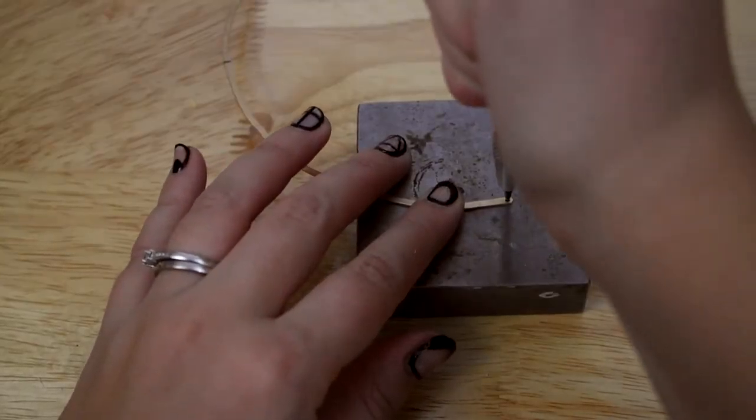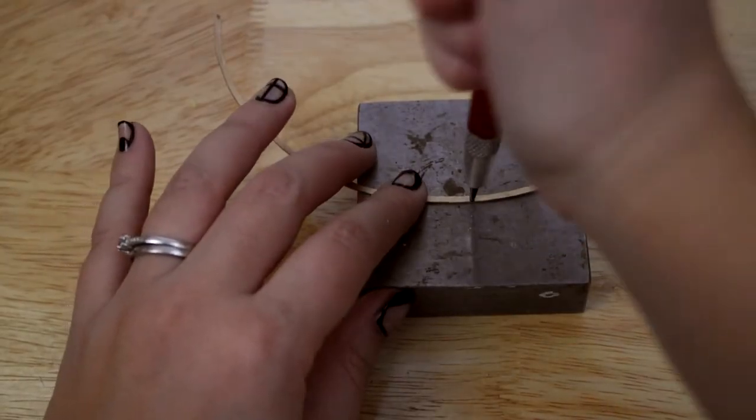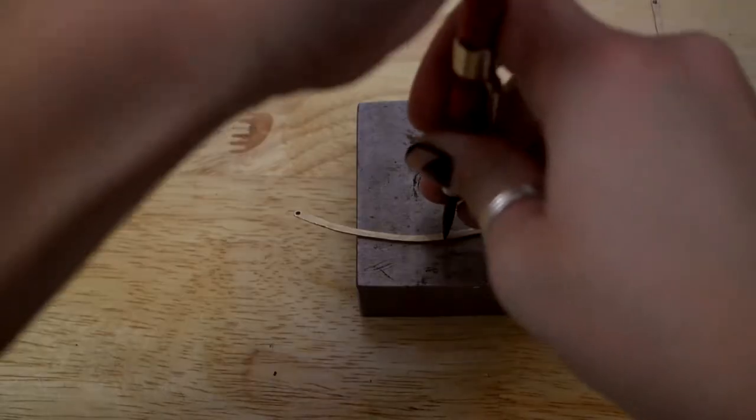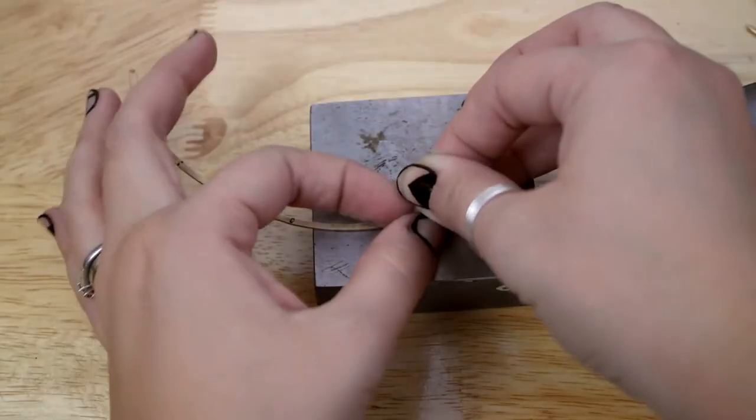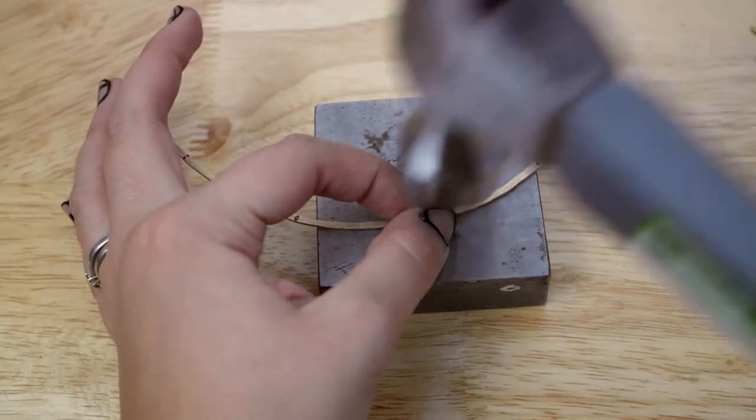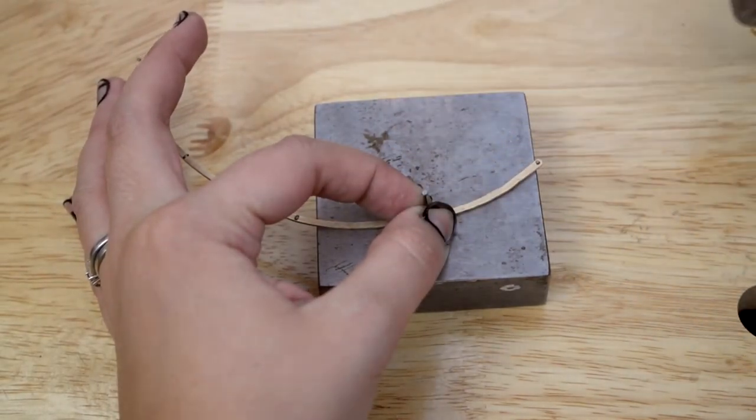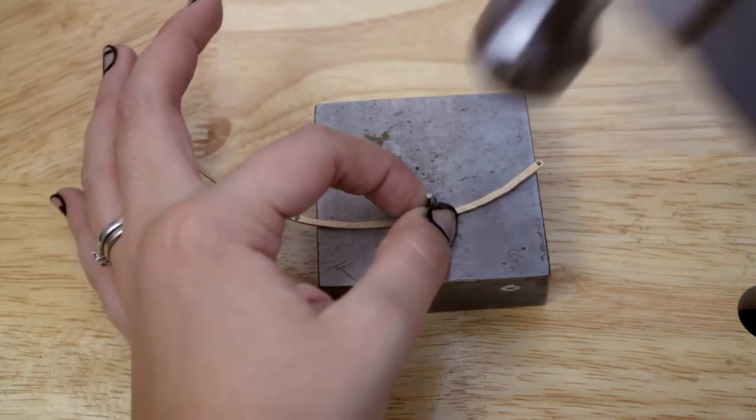Use a center punch to make dents at each mark. If you don't have one of these things you could just use a nail and tap it a little bit with a hammer. You probably should use a longer nail than what I'm showing you though.